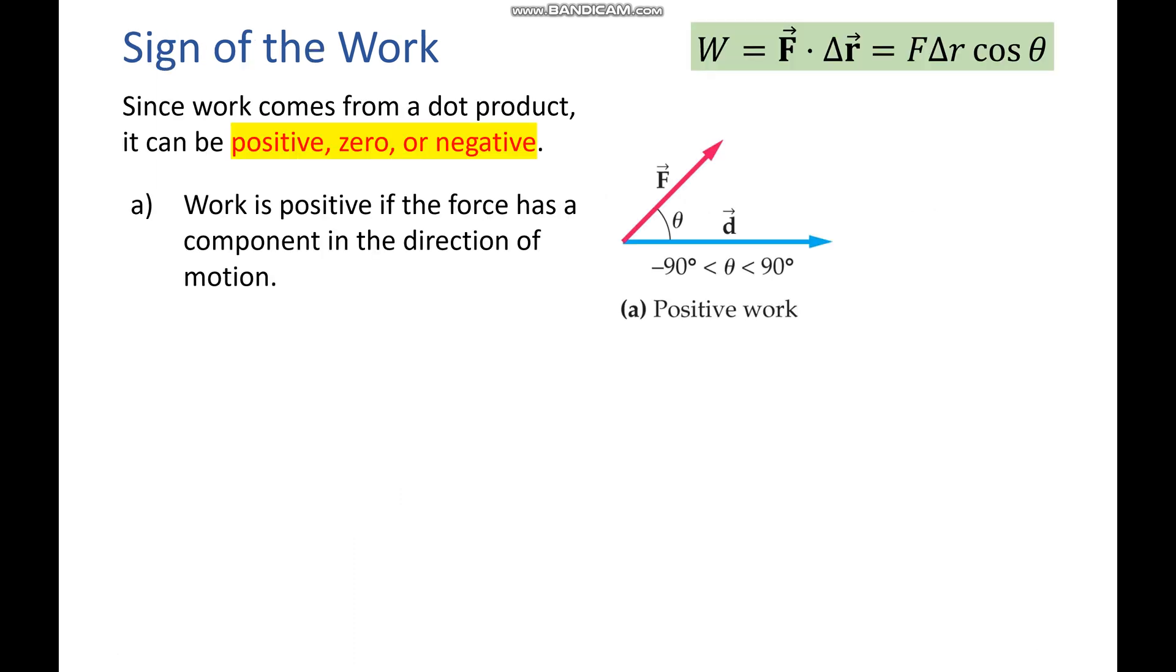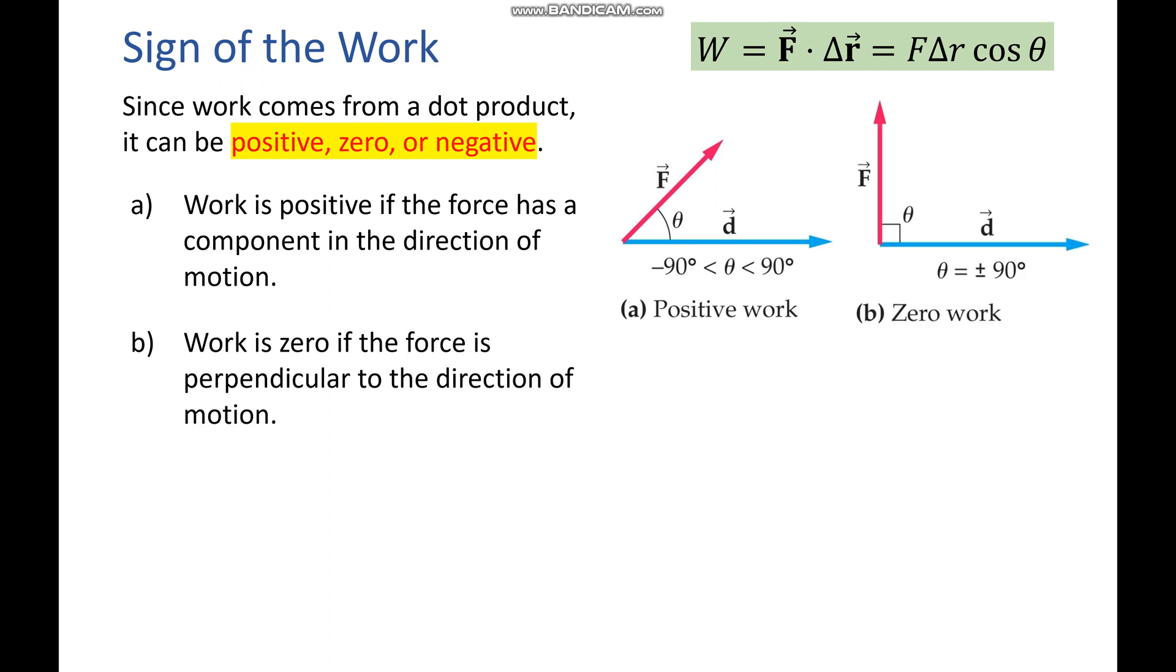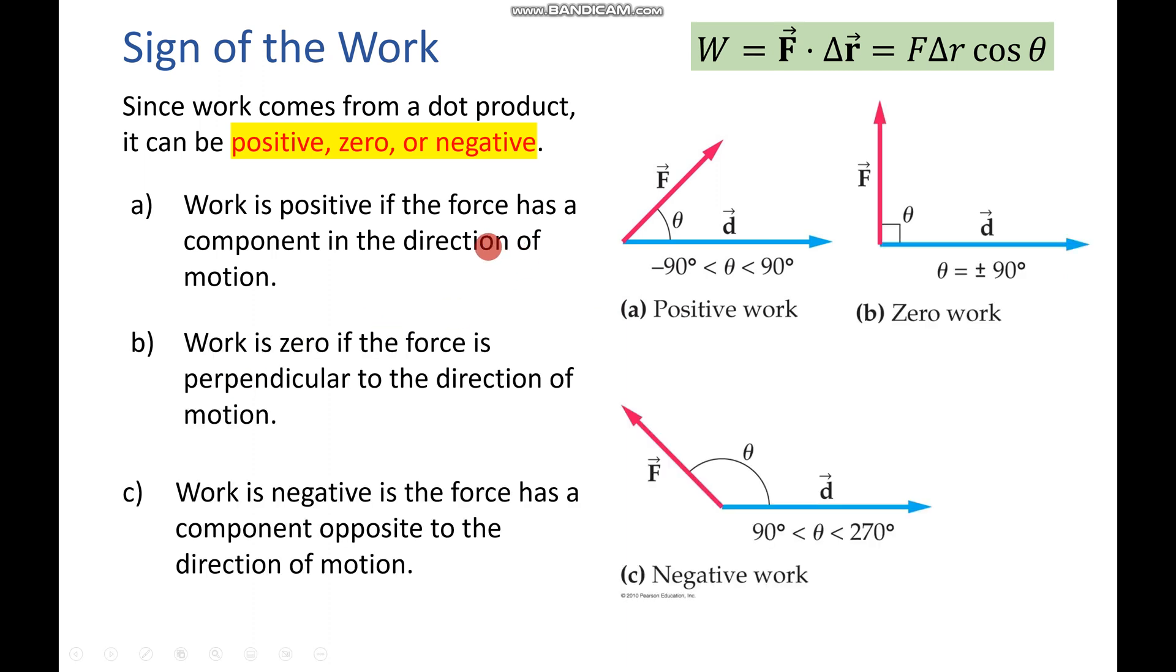And then the sign of work, since it does come from the dot product, could be positive if the force has a component in the direction of motion. Our work would be zero if the force is perpendicular to the direction of motion, and it would be negative if the force has a component opposite to the direction of motion. So, that's kind of the big bullet points here.